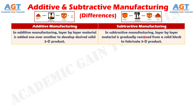Difference number 1. In additive manufacturing, layer by layer material is added one over another to develop the desired solid 3D product. Whereas, in subtractive manufacturing, layer by layer material is gradually removed from a solid block to fabricate a 3D product.